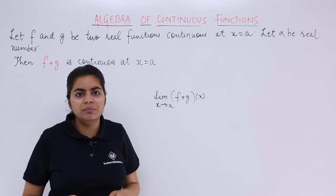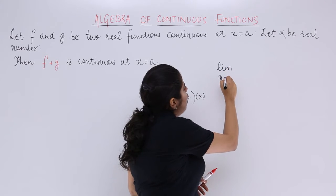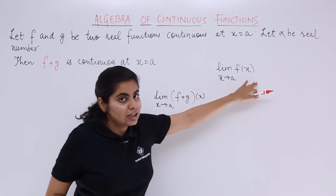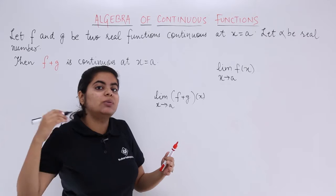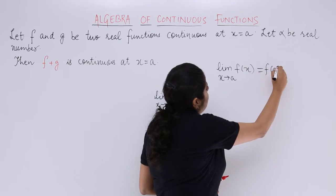When these are continuous, what do we mean by that? We mean that when we take limit of the function fx at x tends to a, since it is continuous, the limit should be equal to the value of the function. Remember in the previous videos? So it should be f of a.